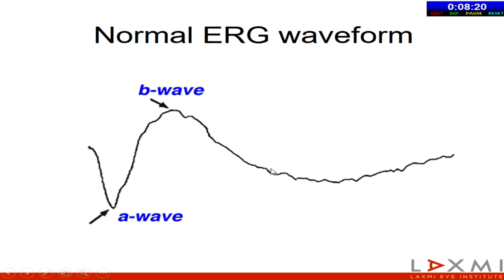The B wave comes down, and over a period of time you may see another positive wave called the C wave. The ERG is basically a representation of the visual pathway's electrical activity. The first cell stimulated by light would be the photoreceptors, so the A wave is derived from the photoreceptors. As the signal is conducted through the visual pathway, it generates the other waves. The B wave is produced by the bipolar cells. As the RPE regenerates vitamin A, it produces the C wave.